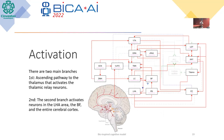Continuing with the model, we have the activation connections. There are two main branches: the first refers to the ascending pathway to the thalamus that activates the dynamic relay neurons, and the second branch activates the neurons in the LHA area of the upper brain and the entire cerebral cortex. In the inhibition pathway we can see the same but for inhibitory brain functions.